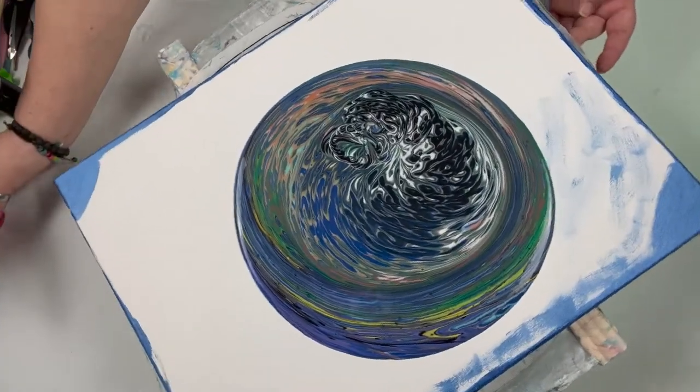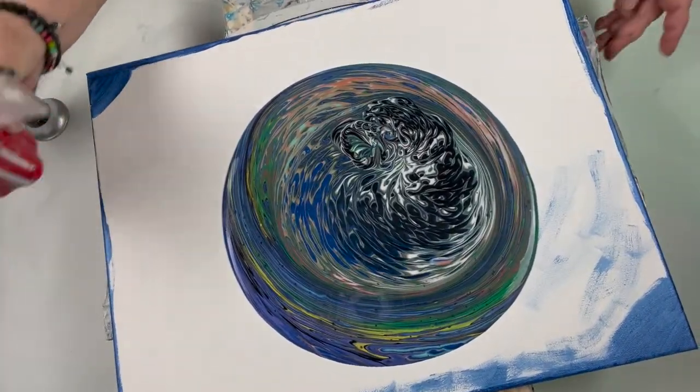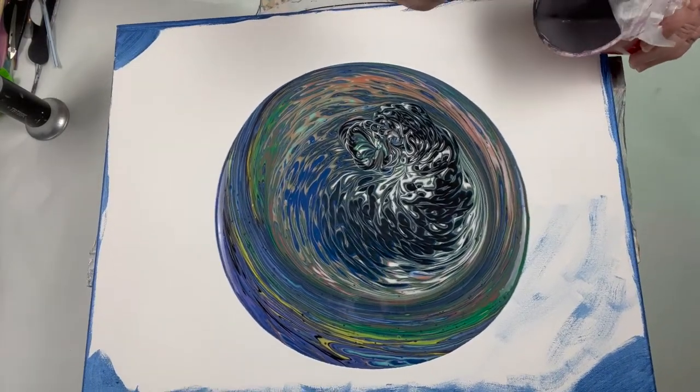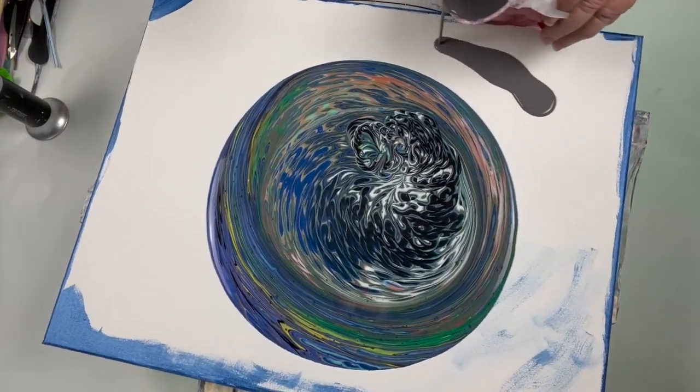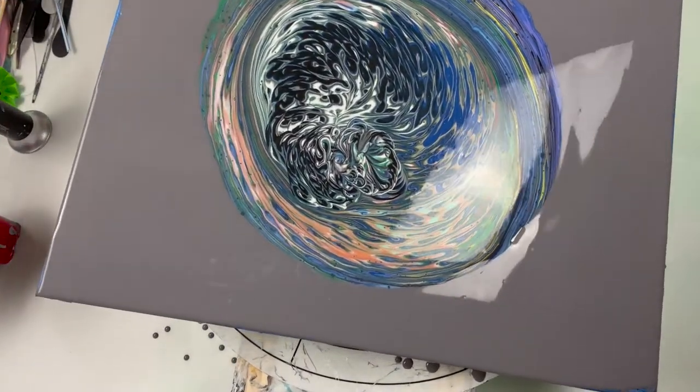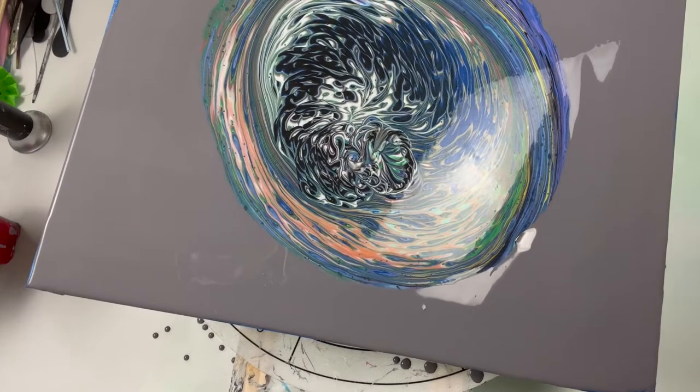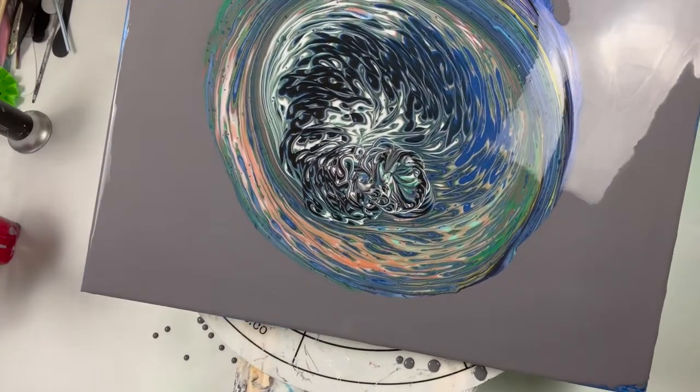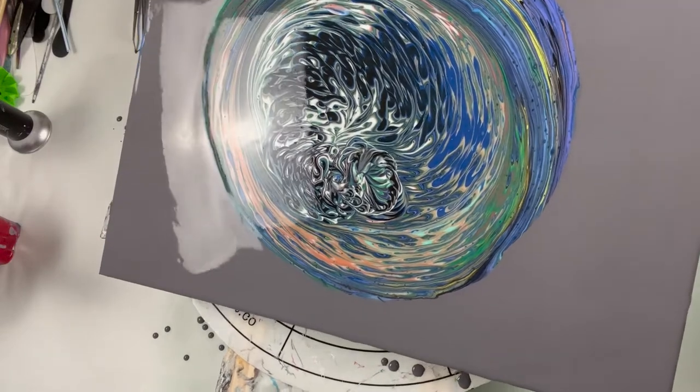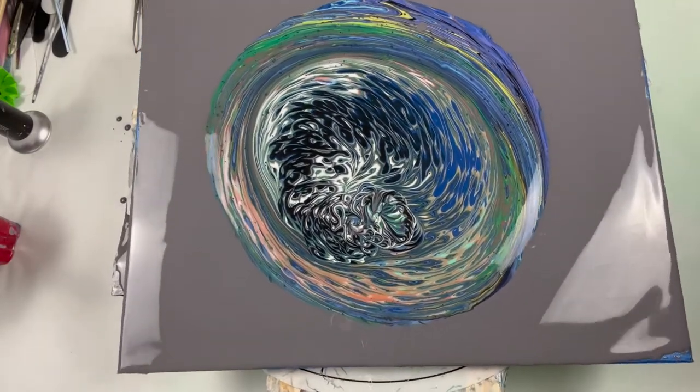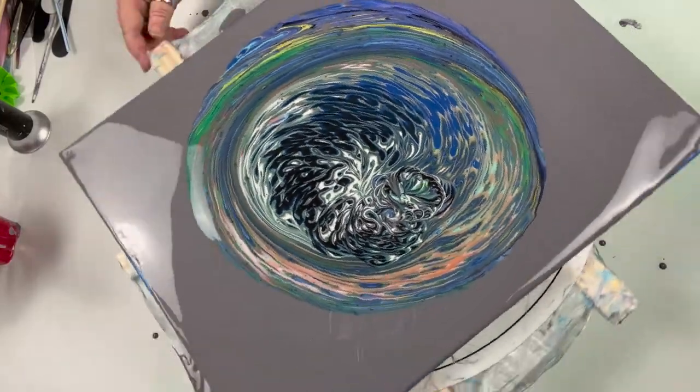Let me go ahead and put flow extender on it while that's setting. I'm using my slop bucket again. Now let's just move it around and then we're gonna spin it. And hopefully we'll cover the whole thing.